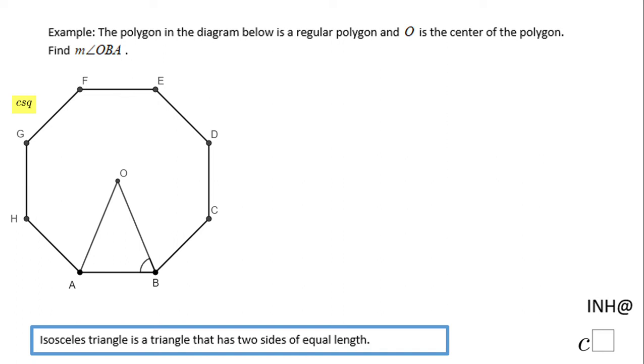Welcome back to I Need Help at C Square. In this example, we have a regular polygon and O is the center of the polygon. We need to find the measure of angle OBA. We're gonna call it X, and because this is the center of the polygon, we know these two sides of this triangle